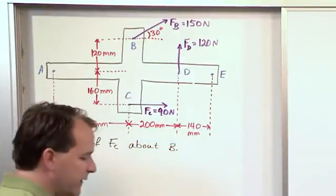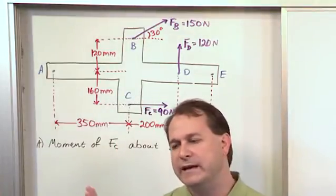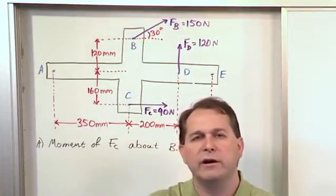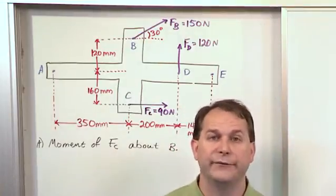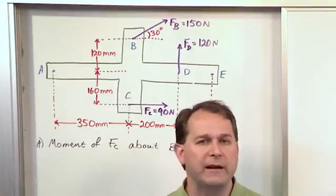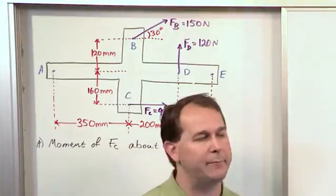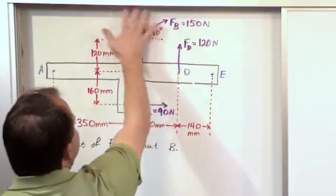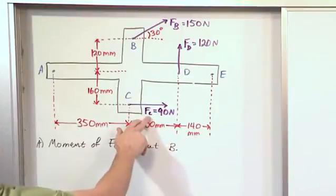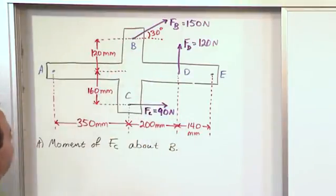Because remember, we talked in the last section that the moment of a force is basically the perpendicular component of that force acting some distance away from a point. So when you're talking about a moment, it's always about some point because it's trying to cause a rotation about that point. In this particular case, we're only concerned with F sub C. We're not even concerned about these guys in this part of the problem. F sub C causing a rotation, essentially, about point B.